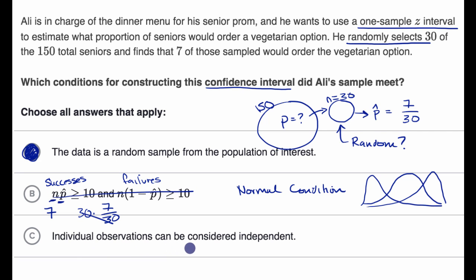Individual observations can be considered independent. Well, if he randomly selected people with replacement, then they could be independent. Or if the people he is selecting, if his sample size is less than 10% of the total population, then it could be considered independent, even though it wouldn't be perfectly independent. But we see here that he sampled 30 people out of 150.